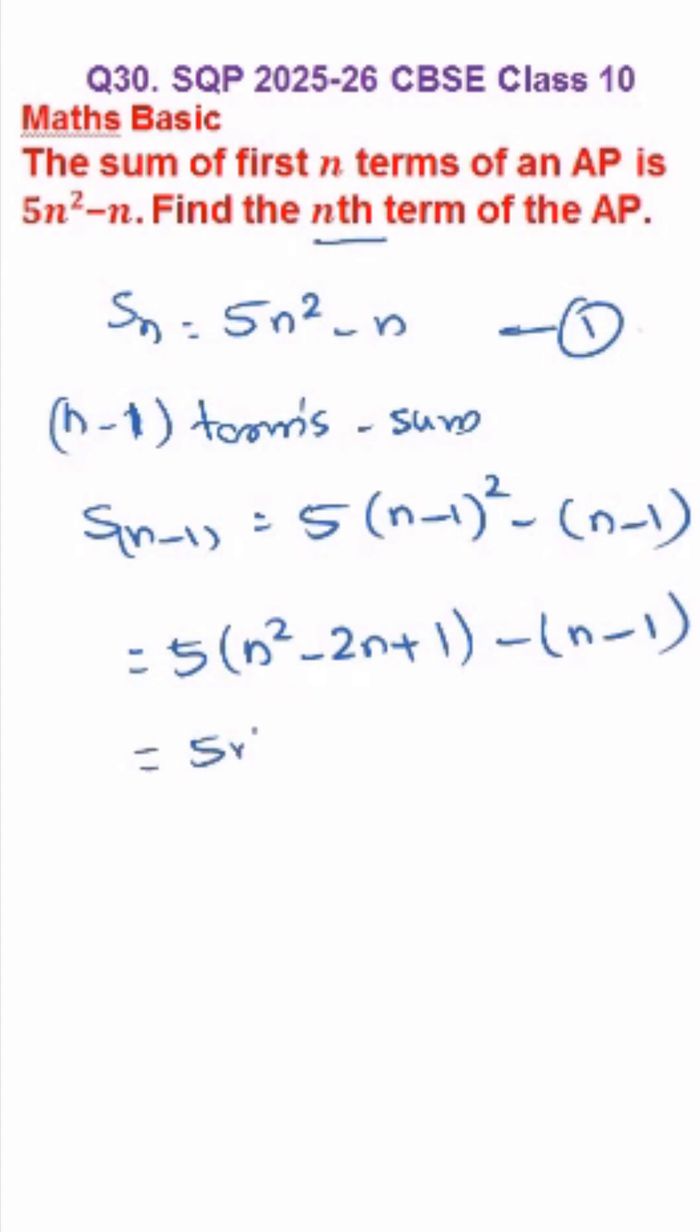So 5n square minus 10n plus 5 minus n plus 1, that's equal to 5n square minus 11n plus 6.